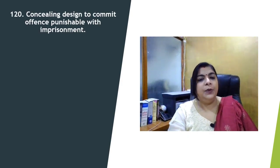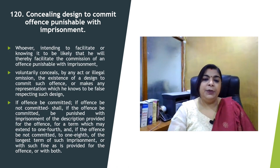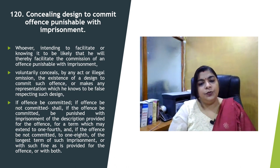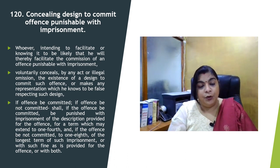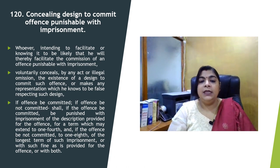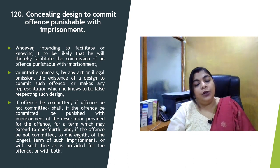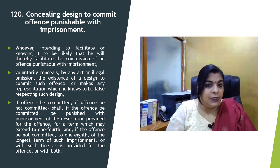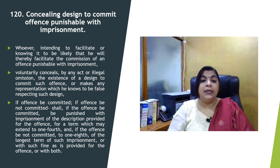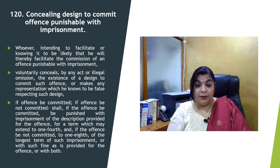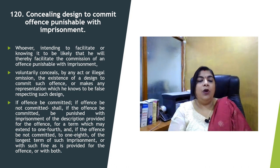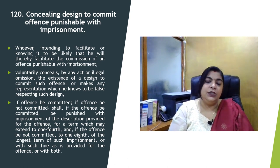Section 120 of IPC describes concealing design to commit offense punishable with imprisonment. This section is related to the same thing as Section 119 but for the common man, not for the public servant. If any person is concealing the design to commit an offense — meaning he is well aware that some sort of offense is going to be committed and he is not informing police, not helping police, or misrepresenting police or a magistrate — and is allowing another person to commit that offense, then the punishment for that person will be one-eighth of the longest term of the punishment prescribed for that offense. This is stated under Section 120 of IPC.